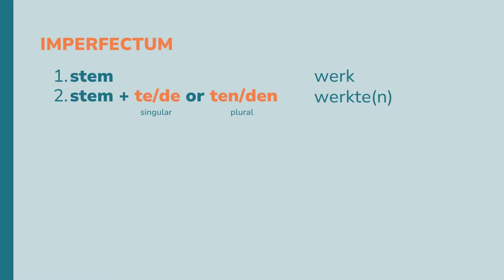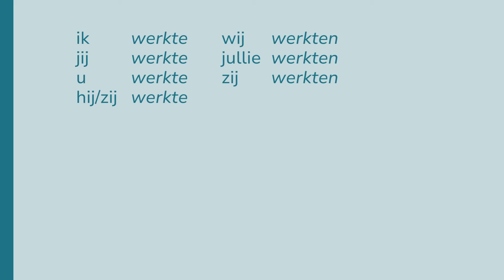Back to the imperfectum. Take the stem of a verb: 'werk.' We already found out that we need to work with the t, since the k is in the ex soft ketchup. Imperfectum is stem plus -te/-ta or -ten/-dan when plural: ik werkte, jij werkte, u werkte, zij werkte, hij werkte, wij werkten, jullie werkten, zij werkten. When it's plural, you get the n at the end. Most Dutchies don't pronounce the n at the end, but you definitely need to write it.